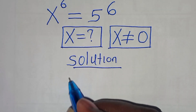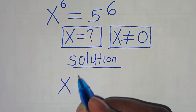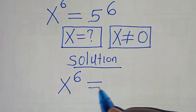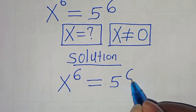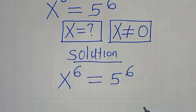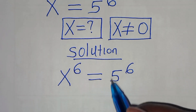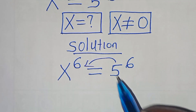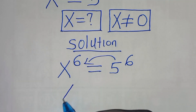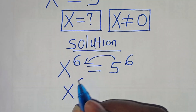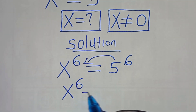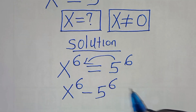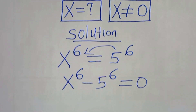We have x to the power of 6, equal to 5 to the power of 6. The first step is to take 5 to the power of 6 on the left-hand side, so that we have x to the power of 6 subtract 5 to the power of 6, equal to 0.